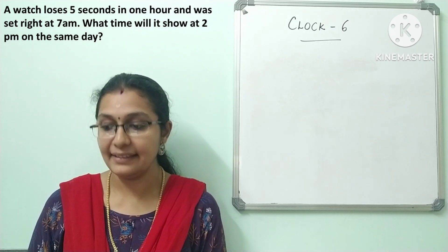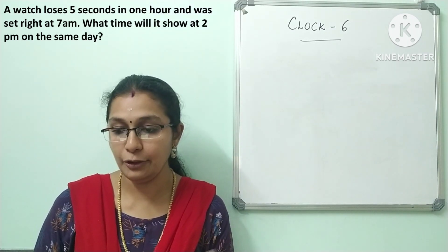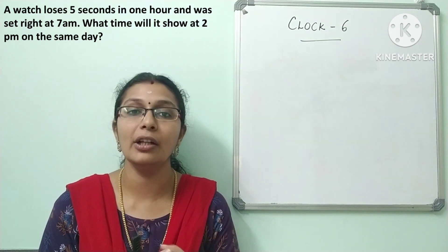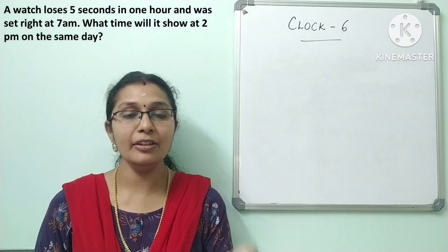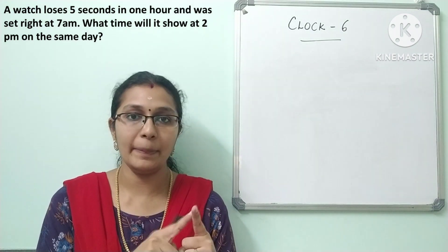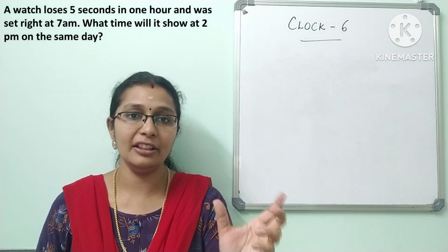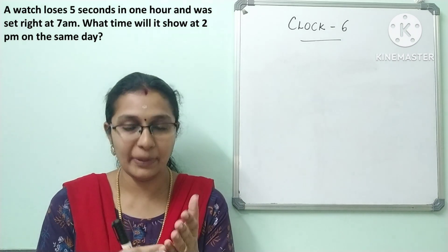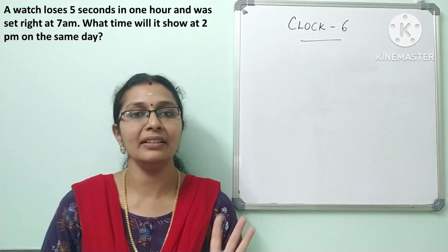A watch loses 5 seconds in 1 hour and was set right at 7 am. What time will it show at 2 pm on the same day? In your question, there are two types: what time will the clock show, or what is the actual true time? That is why the question must be clear.